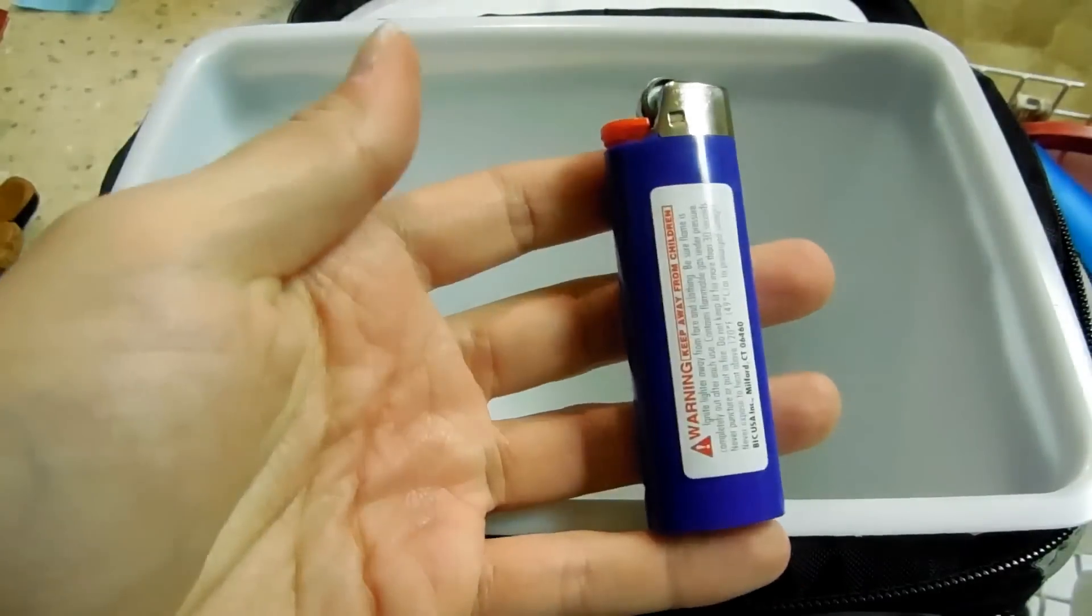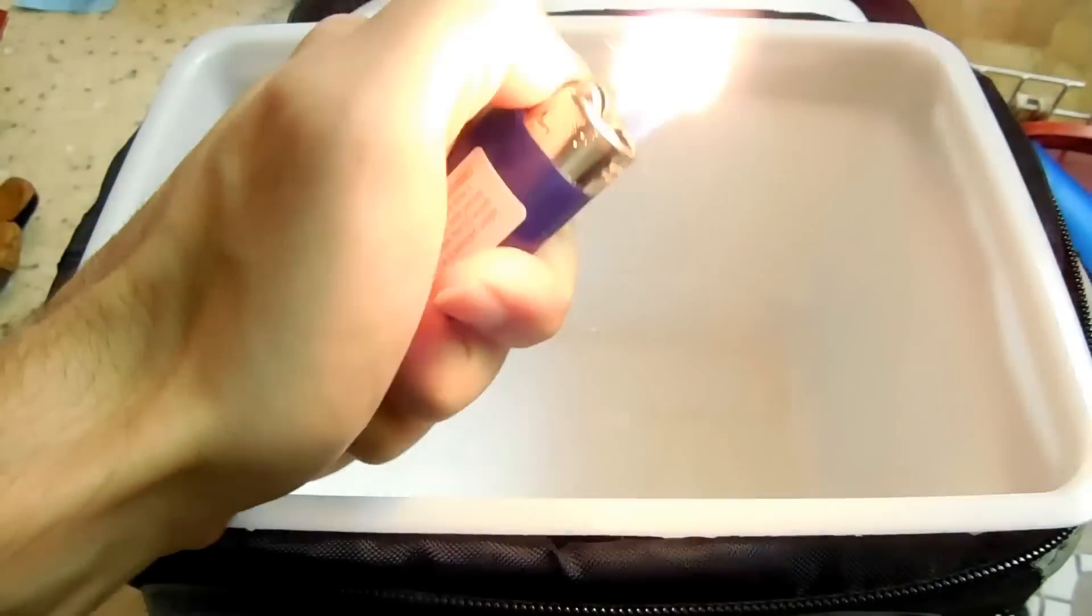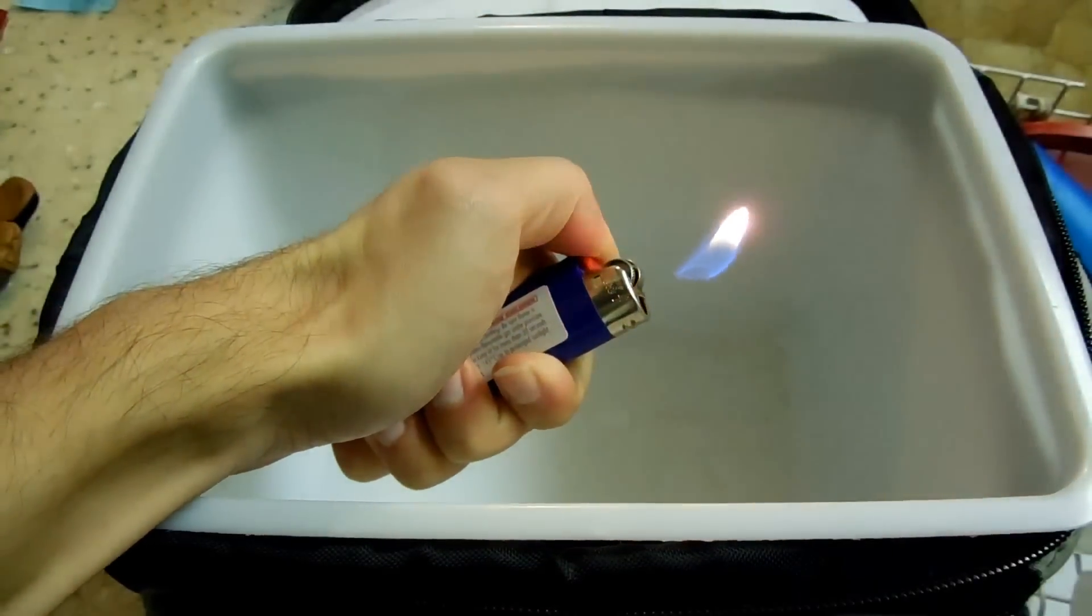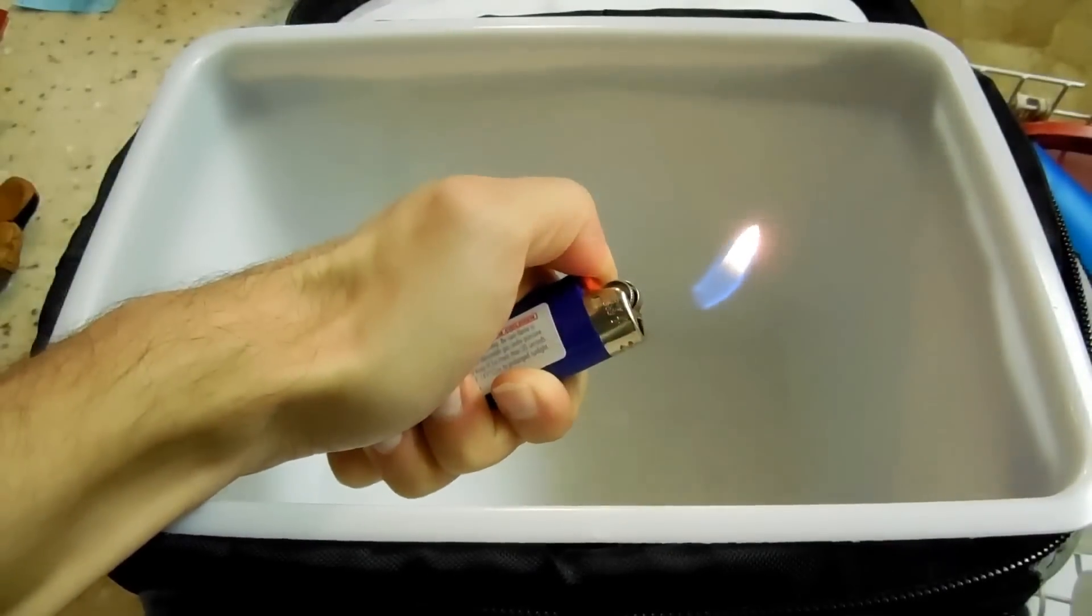This is an ordinary lighter and an empty lunchbox, but when the flame gets near the box, a ghostly presence appears to separate the flame from the lighter, and it starts moving around on its own.